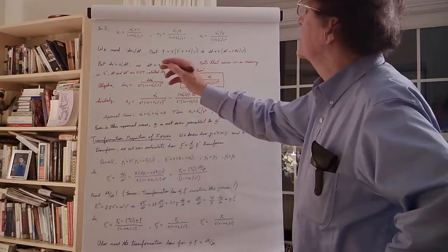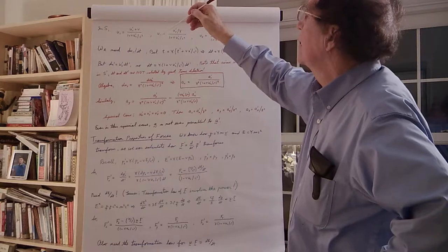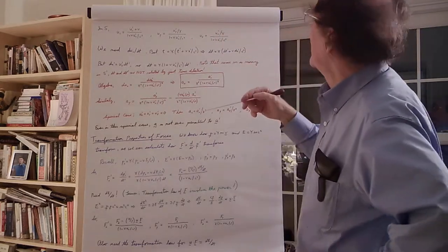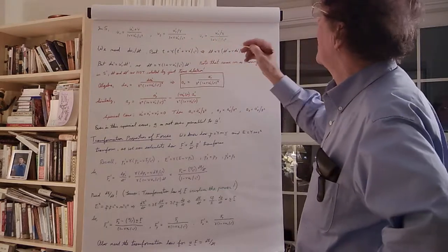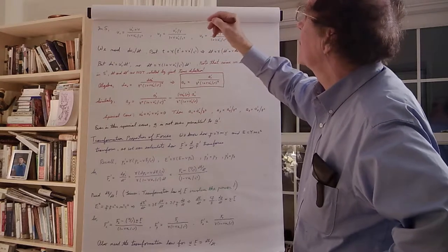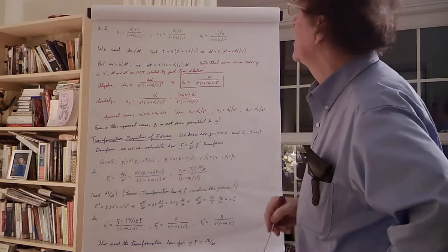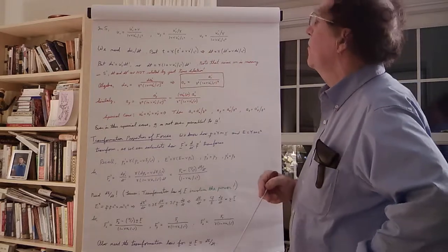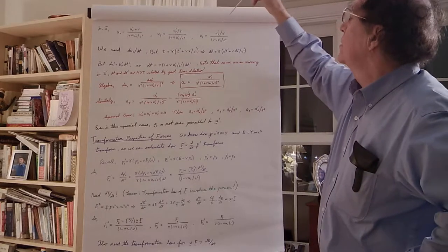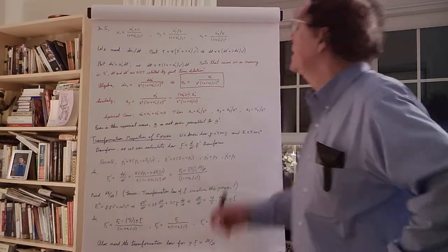Now I want the acceleration in frame S — the rate of change of U sub X with respect to time in frame S. I can take differentials of these formulas; the only variables are the U and U primes, since V and C are constants. I also need to know how DT in frame S relates to DT prime in frame S prime. That's easy because I have the Lorentz transformation, which gives me T in terms of T prime and X prime.